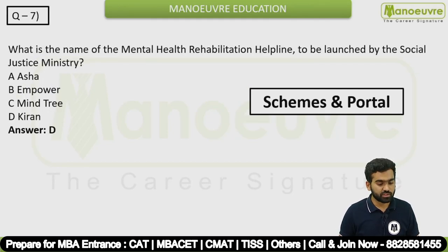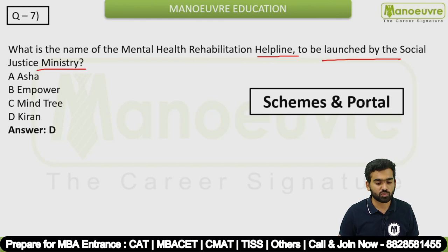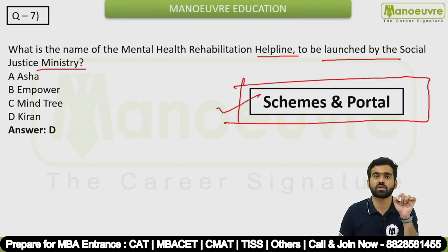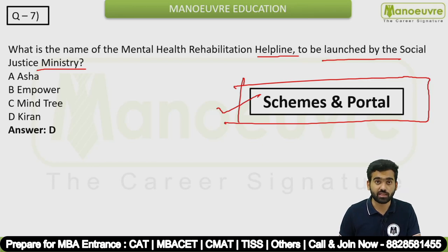Question 7: What is the name of the mental health rehabilitation helpline launched by the Social Justice Ministry? This is a schemes and portals related current affairs question. The answer is option D — Kiran.